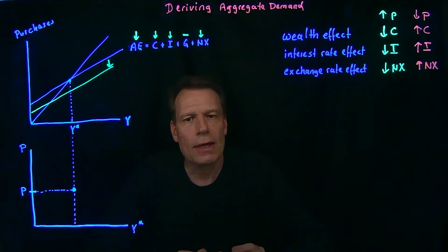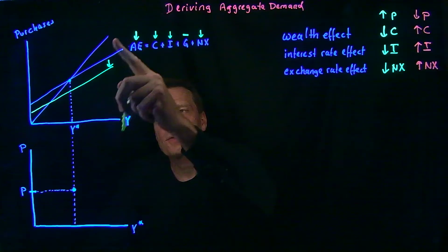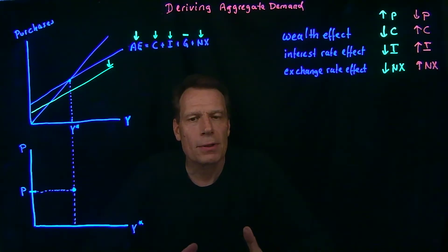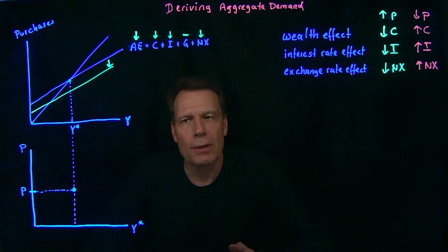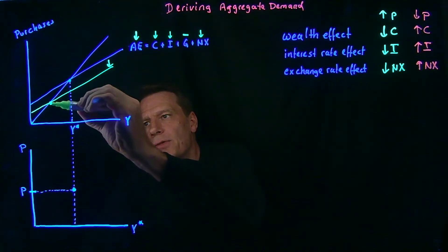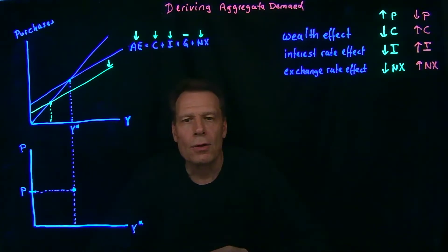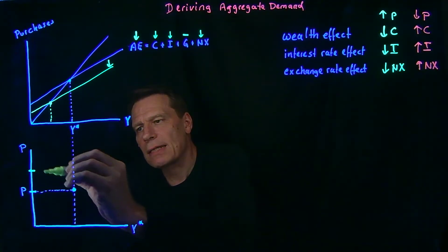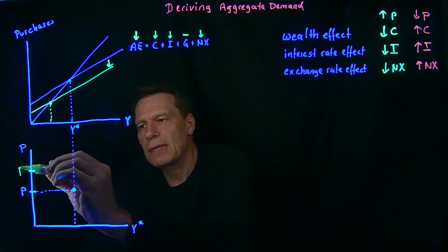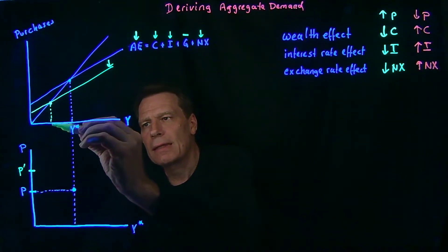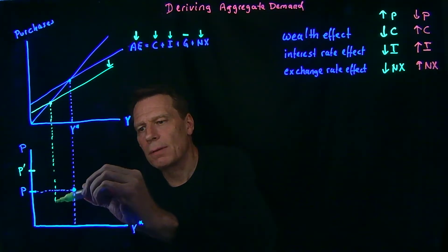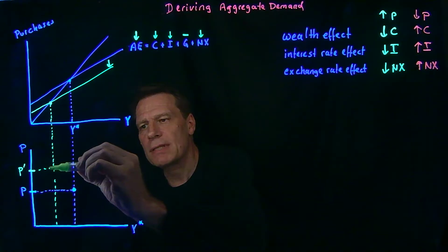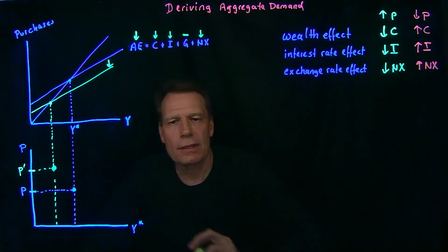That new aggregate expenditure curve intersects our 45-degree line — which contains the potential equilibrium points where real GDP equals purchases — at a lower level of GDP. So equilibrium GDP falls as the price level increases. At the new higher price level, which we'll indicate as P', we get this new lower level of equilibrium GDP, giving us a second point on our aggregate demand curve.